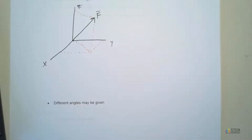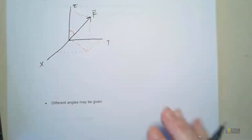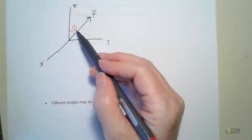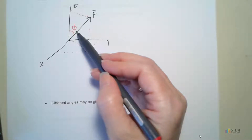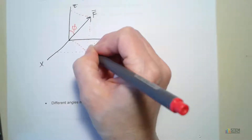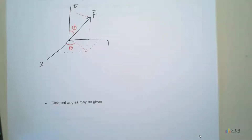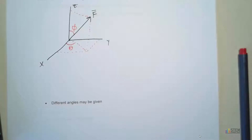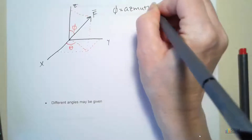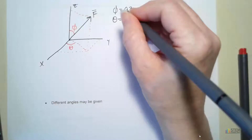In this case, what we're going to be given is these 2 angles. We're given this angle right here — let's call that phi. The angle between the positive Z axis and the force will be phi, and the angle between X and this dashed line here in the middle, let's call it theta. So phi is the azimuth angle and theta is the transverse angle.